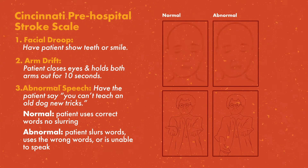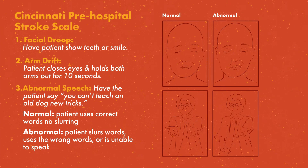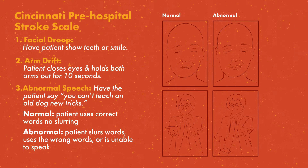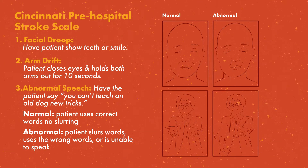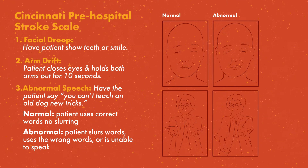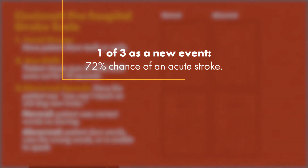There are several screening tools to choose from. The Cincinnati Pre-Hospital Stroke Scale is the most widely recognized. It assesses for facial droop, arm drift, and abnormal speech. Patients with one of these three findings as a new event have a 72% chance of an acute stroke.